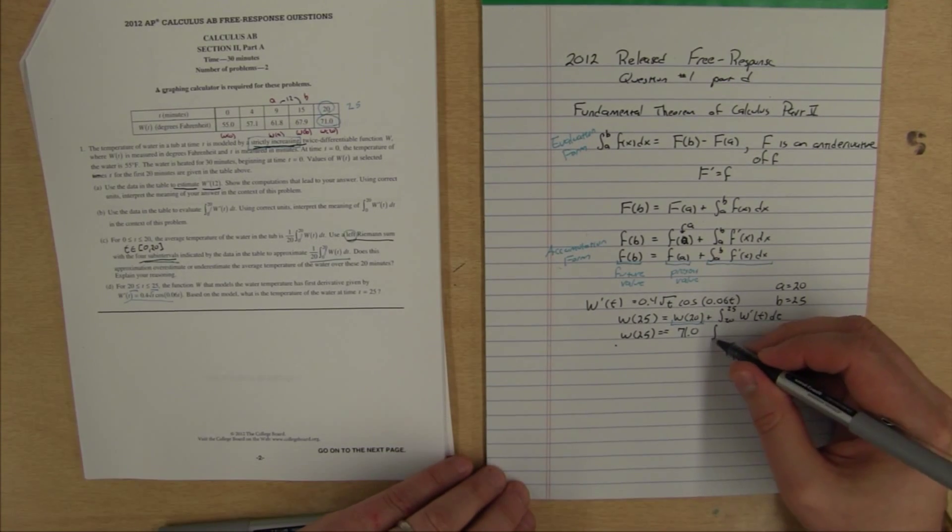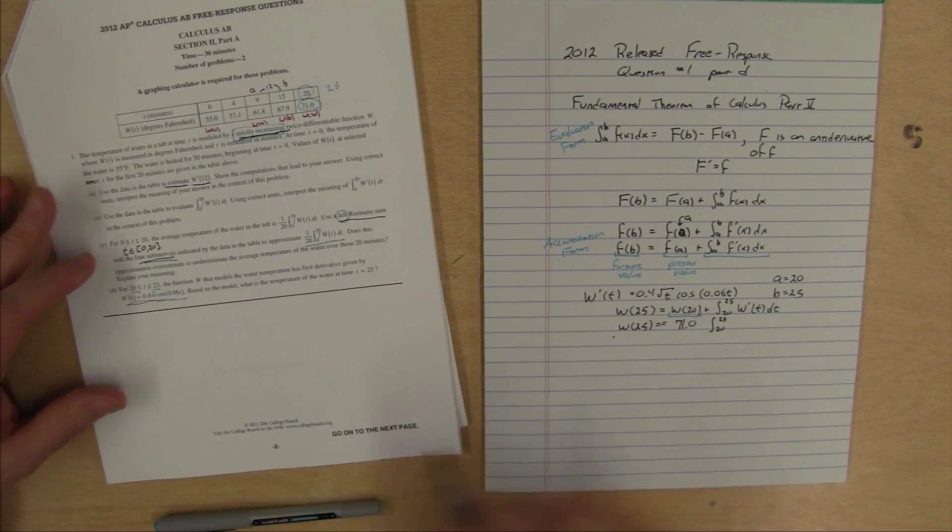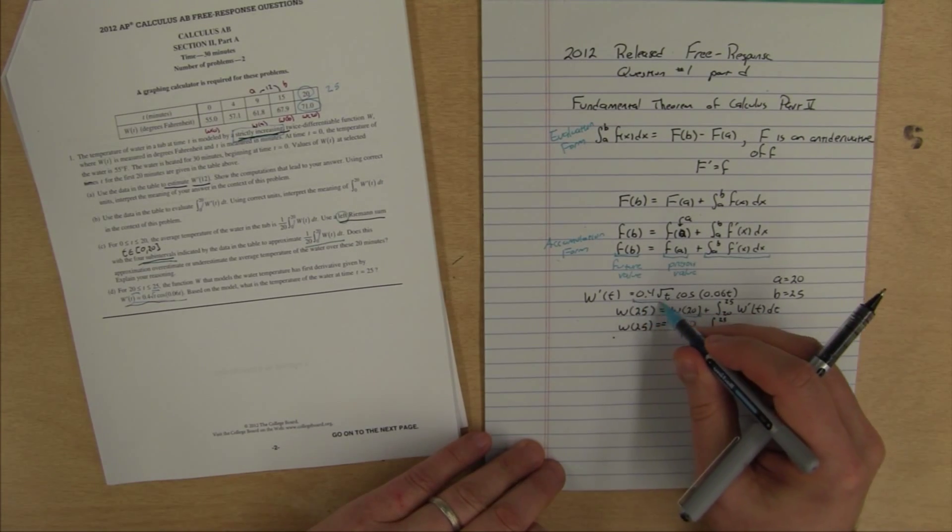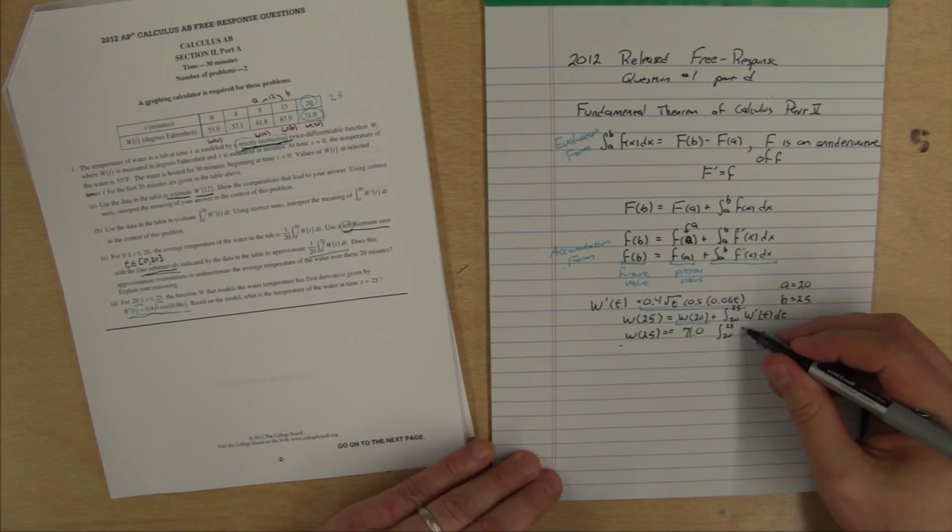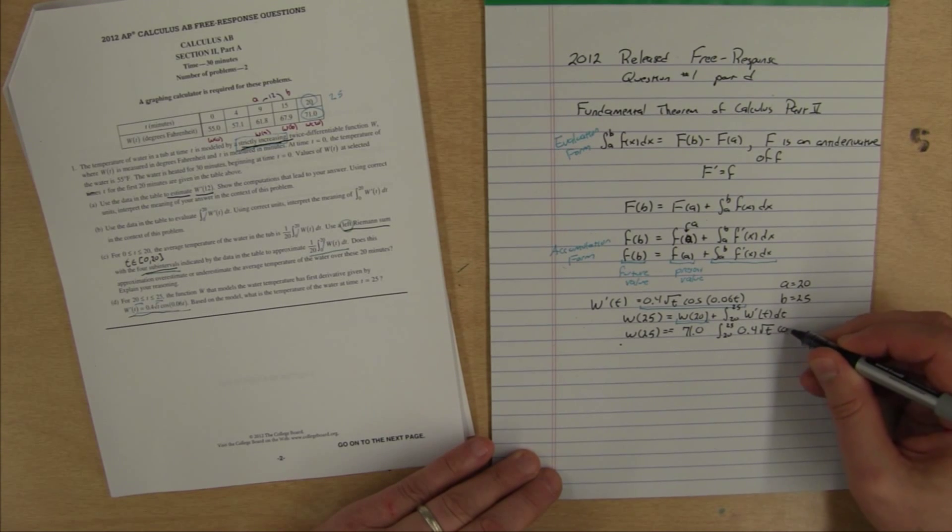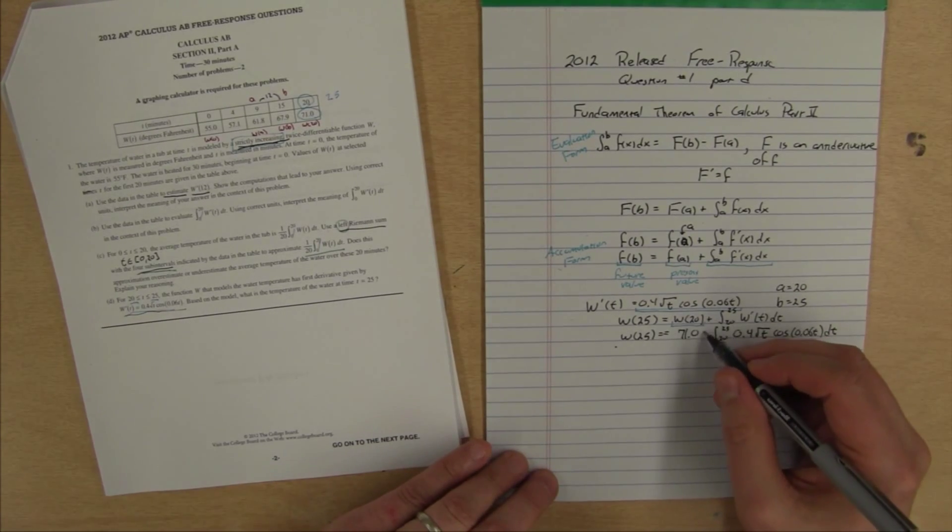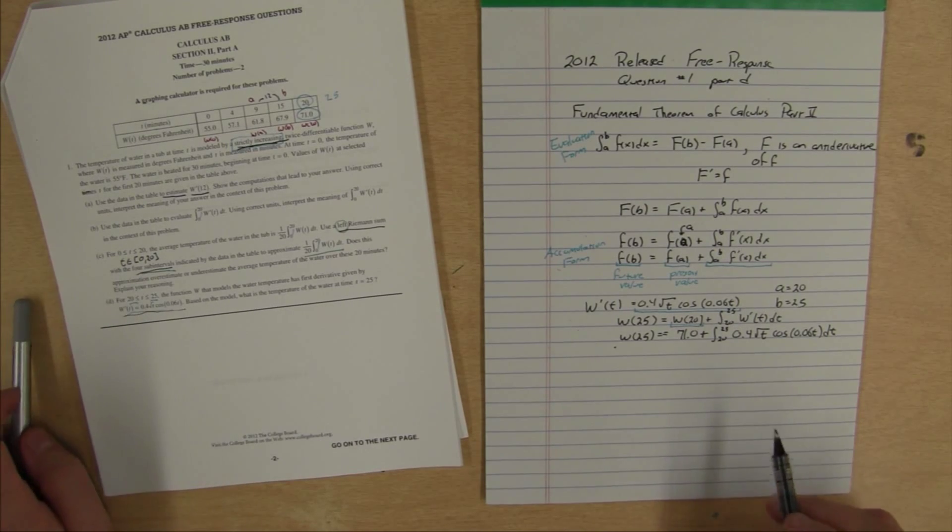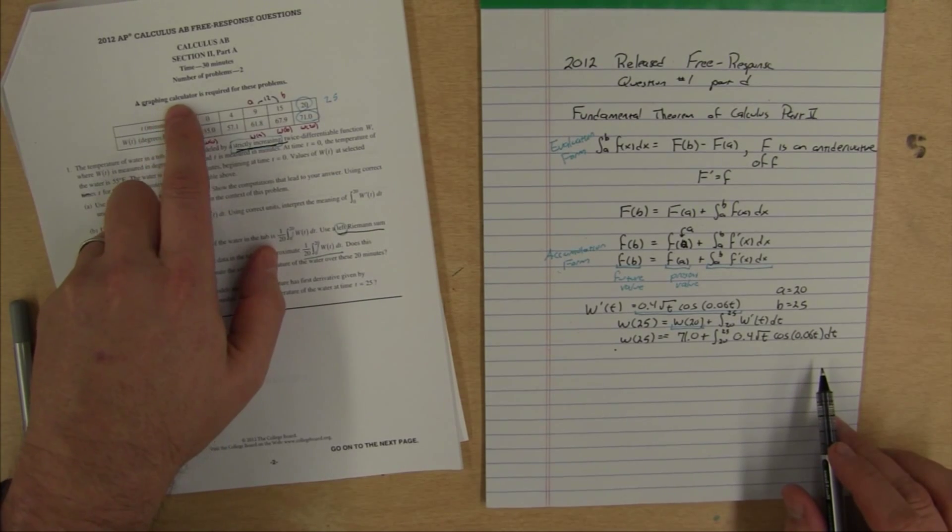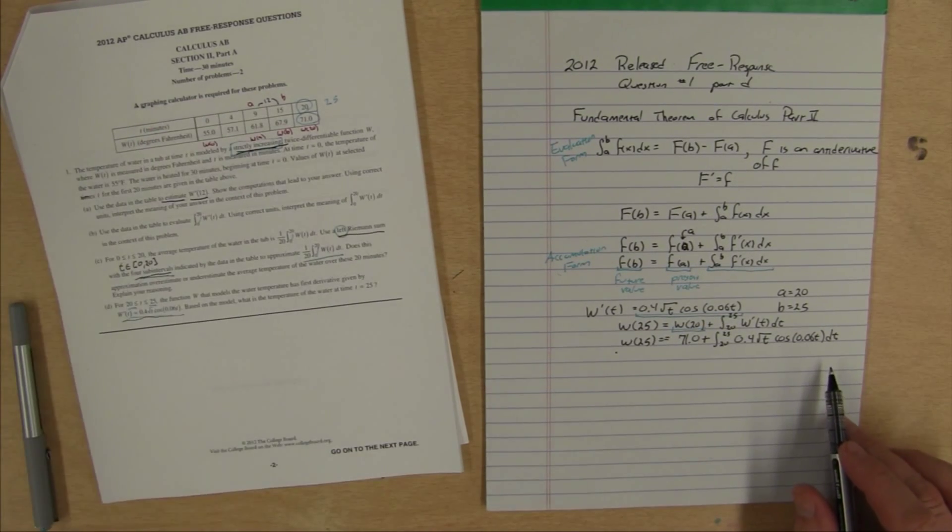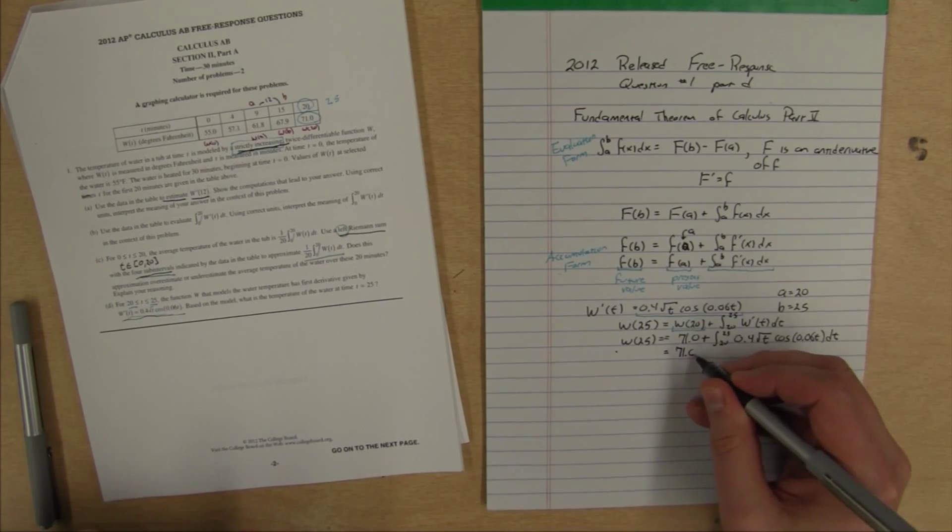I have to deal with this integral from 20 to 25 of w prime of t. They told us what w prime of t is. Our w prime of t is this. I can plug that in right here. That's the integral from 20 to 25 of 0.4 square root t cosine of 0.06 t dt. This integral looks difficult to do. Fortunately, a graphing calculator is required for these problems. This is a calculator active question. That means I can do this integral on my calculator.